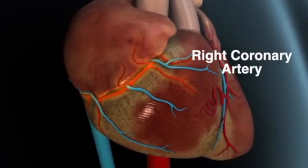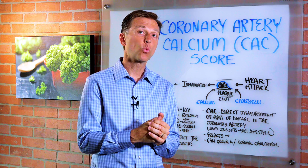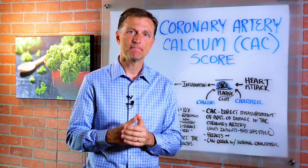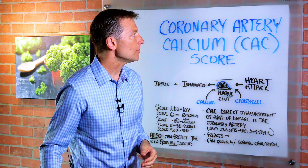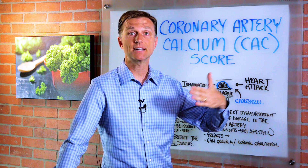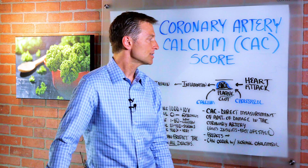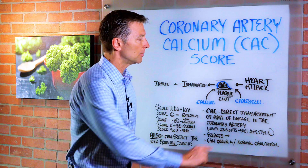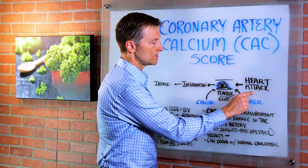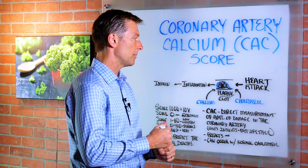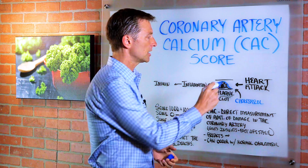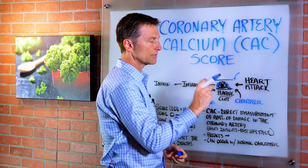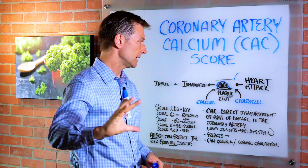Since heart attacks are the number one leading cause of death worldwide, it might be a good idea to know more about this test so you can predict if you're going to have a problem. So if we reverse engineer a heart attack and take it one step back, we're going to get a cramp — the cramp of the heart — because the artery is not free-flowing. There's something obstructing it.